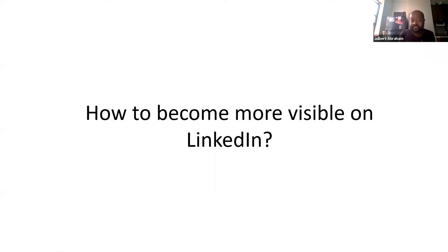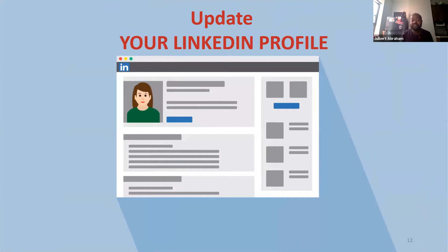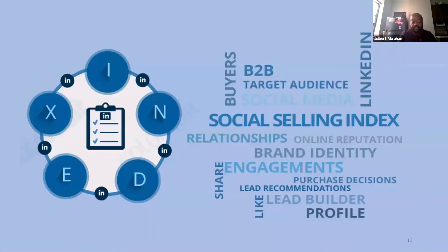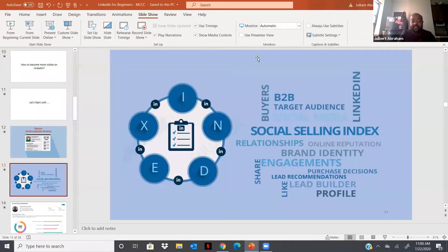So the big question is: how do you become more visible on LinkedIn? We're going to start with one of the most basic things — your profile. To get visibility, you want to start by updating your LinkedIn profile. One of the best ways to do that is to first look at your Social Selling Index score. How many of you have heard of the Social Selling Index score? Type yes or no in the chat. Good — most of you haven't heard of it, so this is a good one.